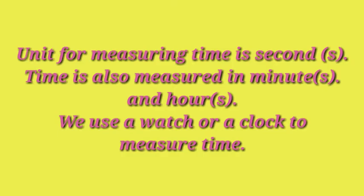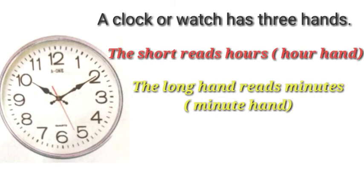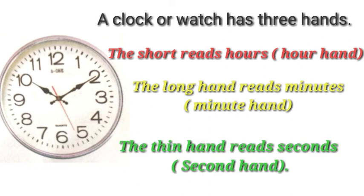Next is time, which is very important. The unit for measuring time is seconds. Time is also measured in minutes and hours. We use a watch or a clock to measure time. There are different types of clocks — wall clocks, wrist watches, and digital clocks. A clock or watch has three hands: the short hand reads the hours and is called the hour hand; the long hand reads the minutes and is called the minute hand; and there is a thin hand called the second hand, which reads the seconds.